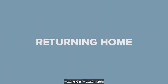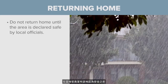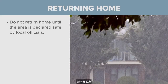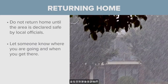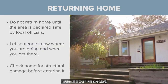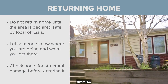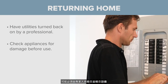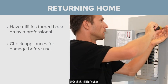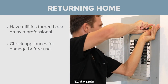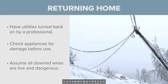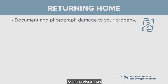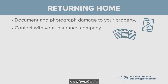After a disaster, once authorities give the all clear, follow these steps to safely return home. Do not return home until the area has been declared safe by local officials. Let someone know that you are returning and let them know when you have arrived. Check your home for obvious structural damage before entering and, if you are unsure, consult with a professional. Utilities may have to be checked by a professional — inspect appliances before turning them back on. Do not attempt to turn on any gas, electric, or water connections. Assume all downed wires are live and dangerous. Document and photograph damage to your property. Contact your insurance company as soon as possible — there may be a wait list for inspection of damages and repair estimates.